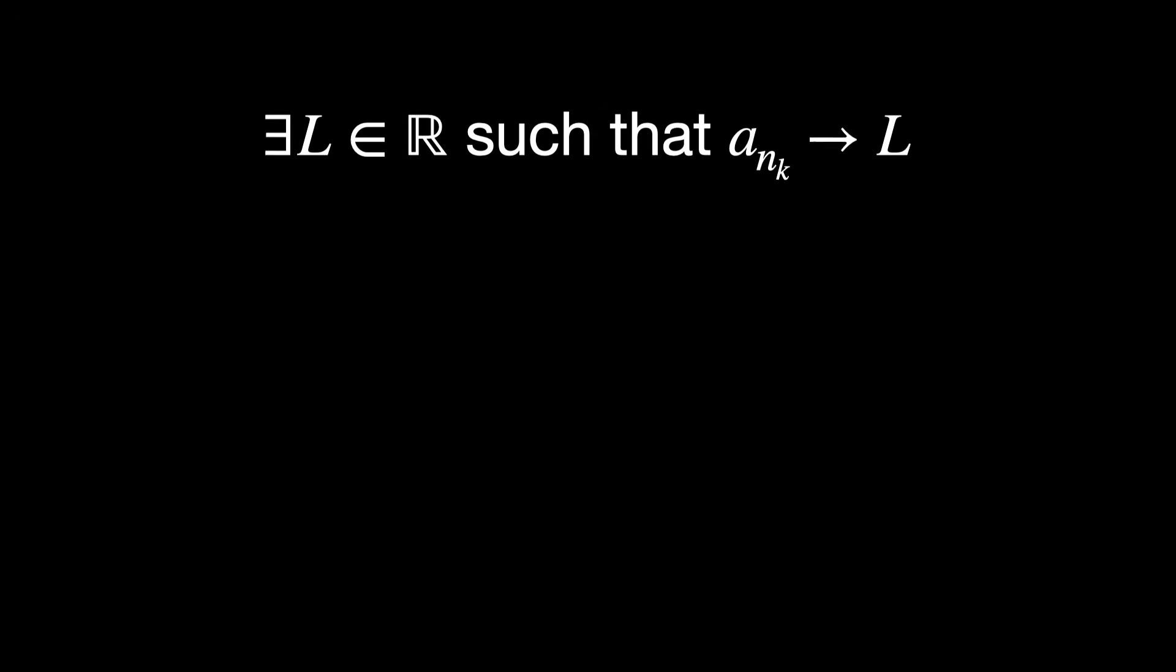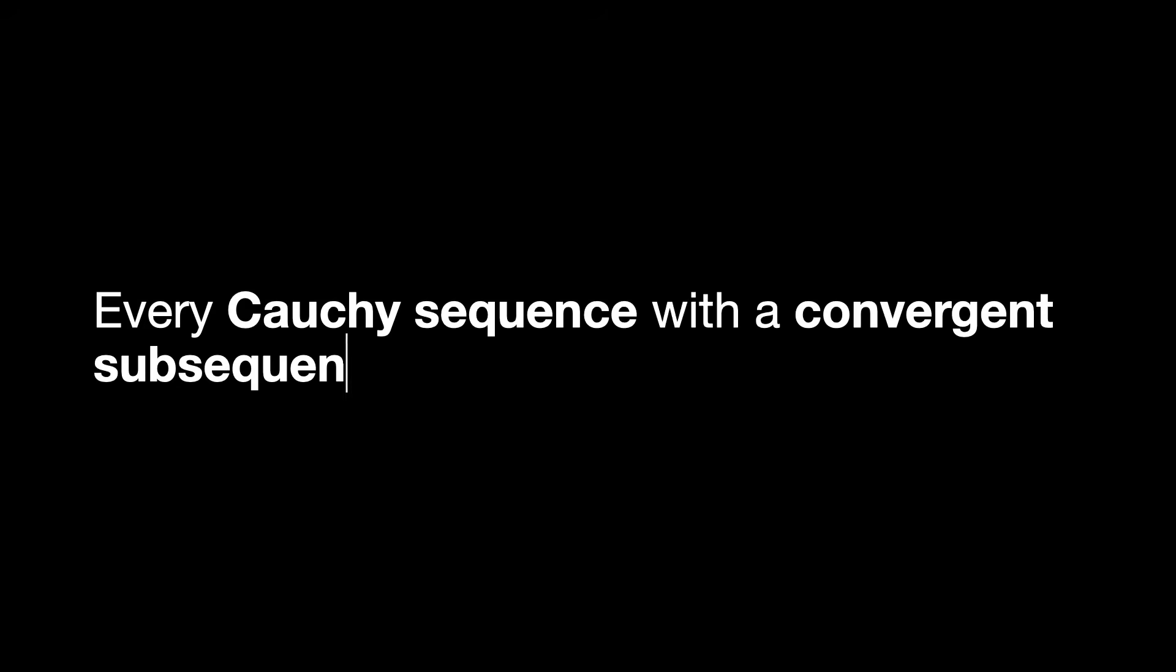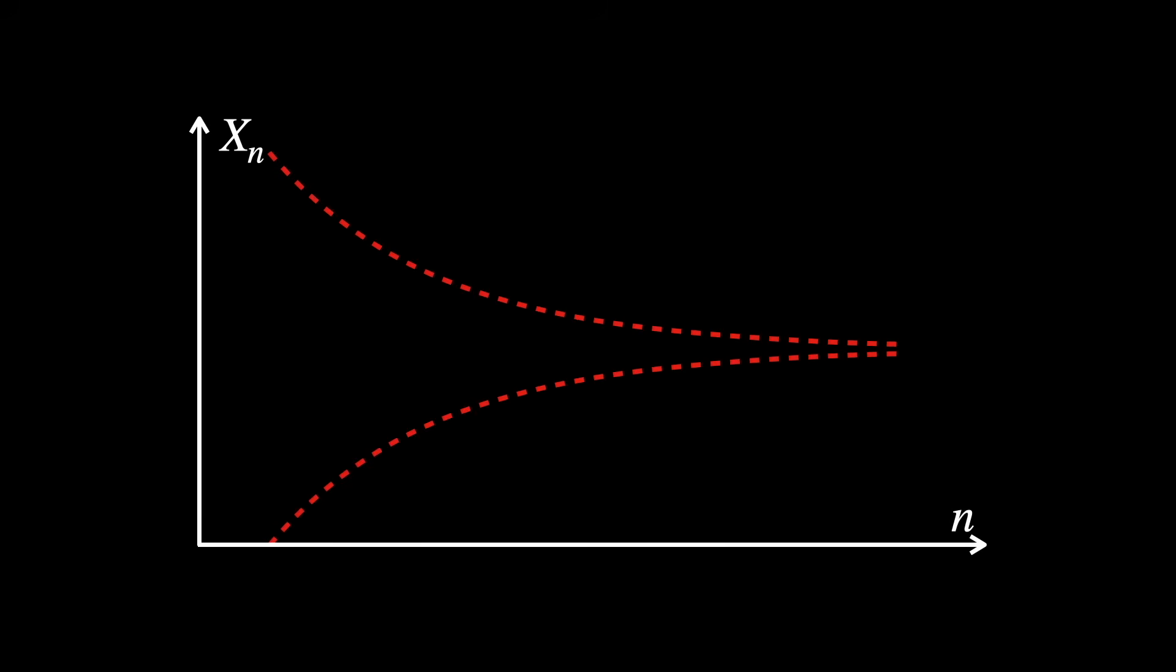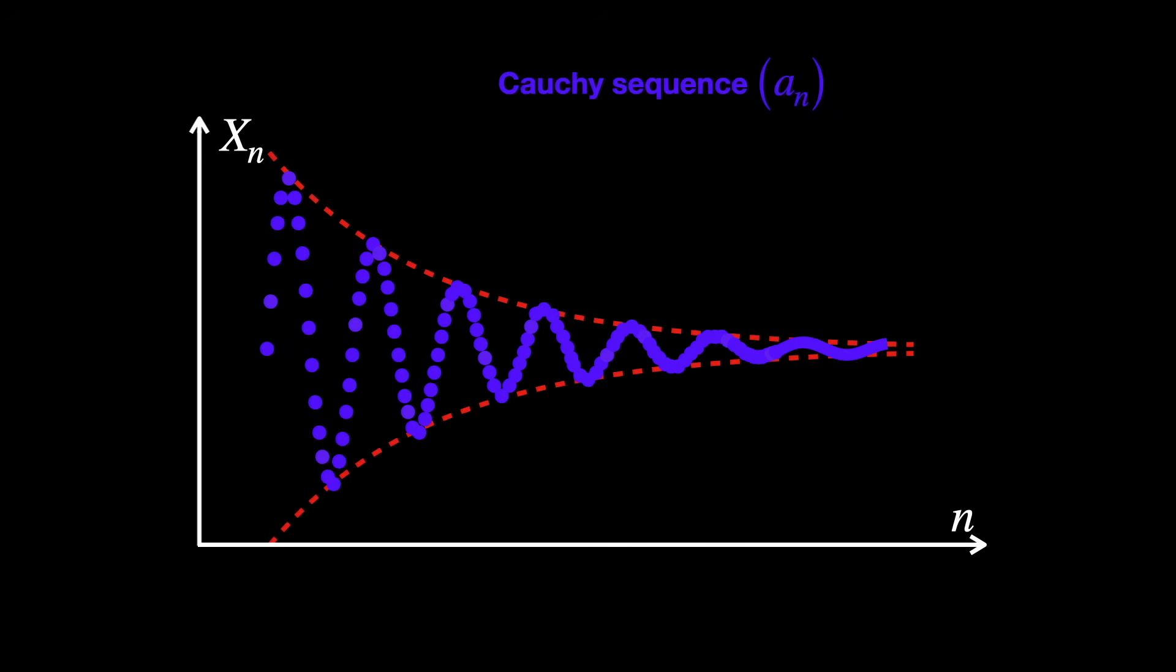So, in the case of what we are trying to prove here, namely that every Cauchy sequence with a convergent subsequence converges, we have that if the whole sequence is internally stable, so Cauchy, and some part of it knows where it's going, so a convergent subsequence, then the whole sequence must actually be heading to that same place.